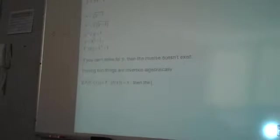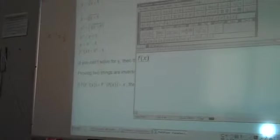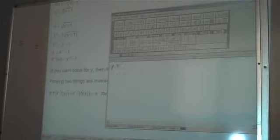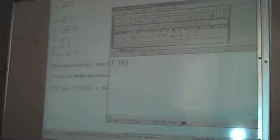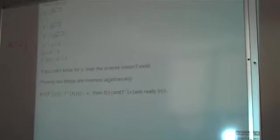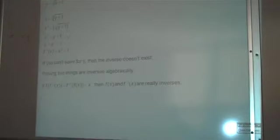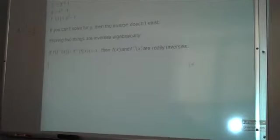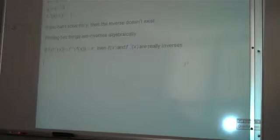Then the two... We're all going to die. Then we're all going to die. The world blows up. Then f of x and f^(-1) of x are really inverses. The algebra to prove this can sometimes get ugly. Are you ready? Be brave.